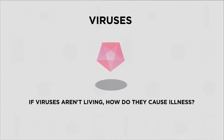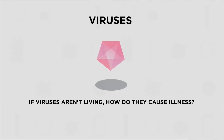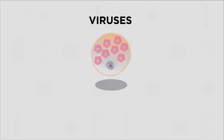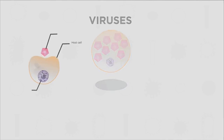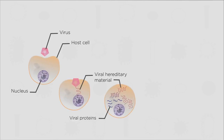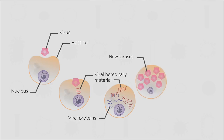So if viruses aren't living, how do they cause illness? Viruses are parasites. They can only reproduce in other living cells. They enter a host cell and hijack the host's genetic machinery, making copies of their own viral genetic material instead.